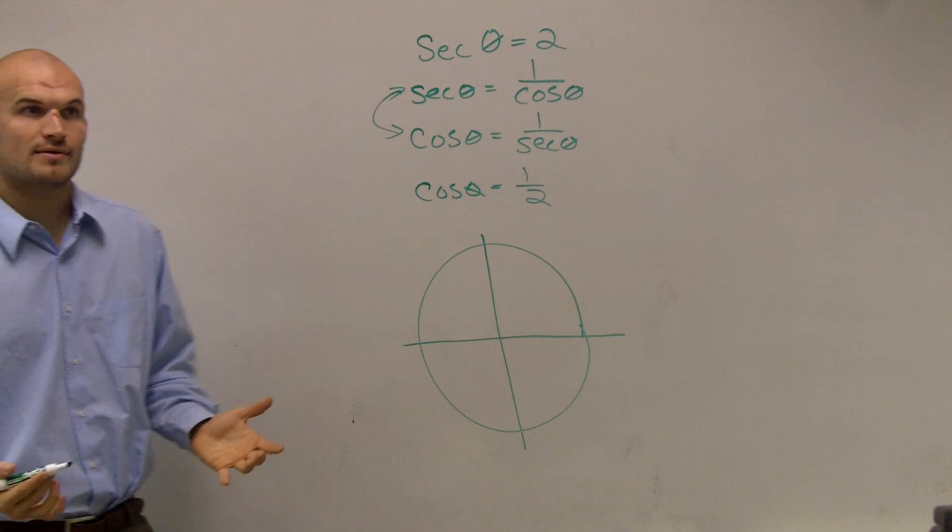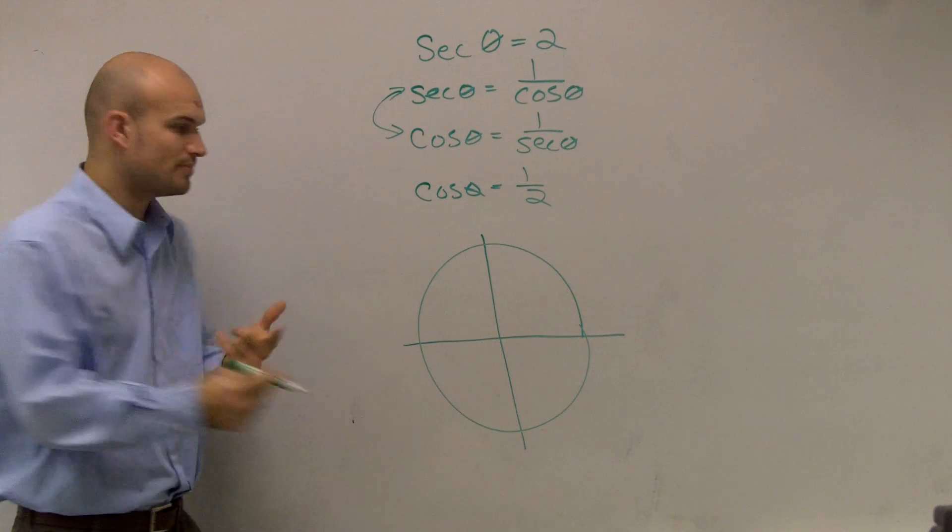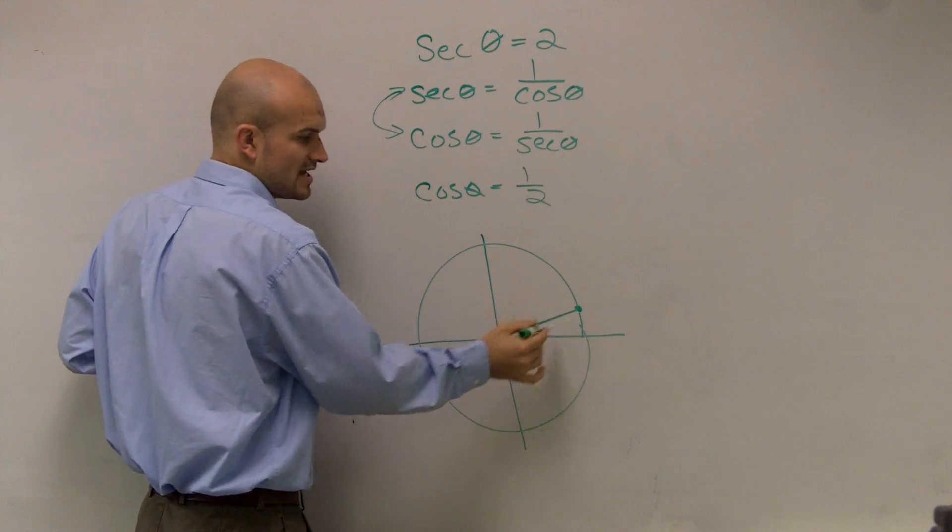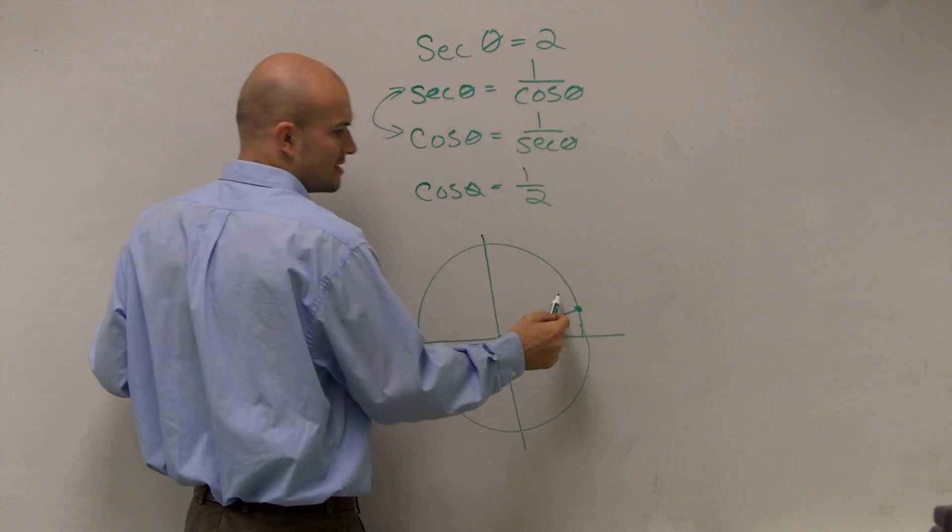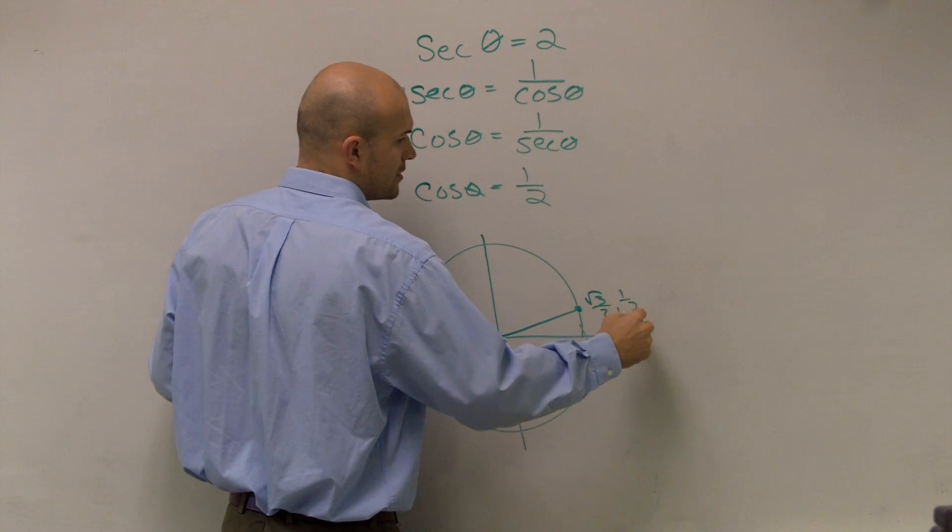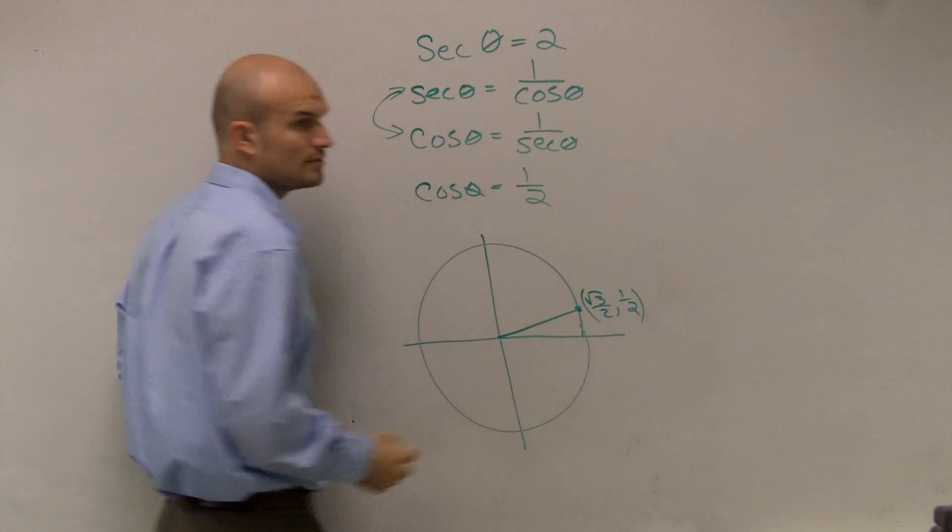You guys have the unit circle, right? We talked about my three important points. The first one was pi over 6. And at pi over 6, or 30 degrees, we have the coordinates square root of 3 over 2 and 1/2.